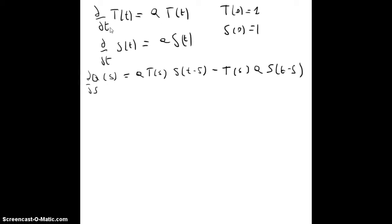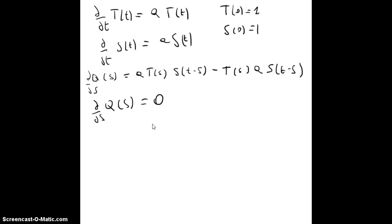As we know, d/dt f(t) = A·f(t) from the differential equation, and the same holds for S(t). Since f(0) = 1 and S(0) = 1, computing d/ds q(s) gives A·f(s)·S(t−s) − f(s)·A·S(t−s) = 0. So d/ds q(s) = 0, which means q(s) is constant.